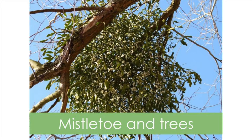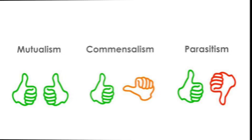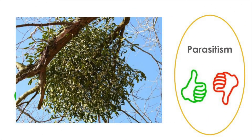Mistletoe needs another plant to survive. As mistletoe grows on a tree, its roots invade the bark, allowing the mistletoe to absorb the tree's nutrients. What type of symbiosis might it be? Check your answer: the mistletoe benefits while the tree is harmed — this is an example of parasitism.